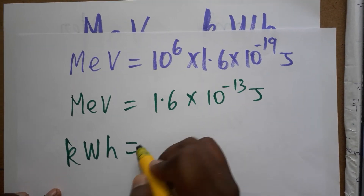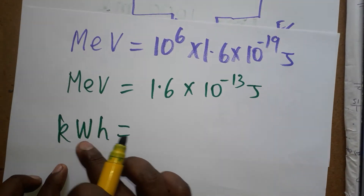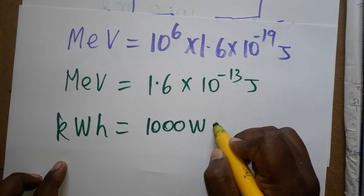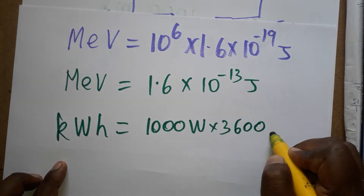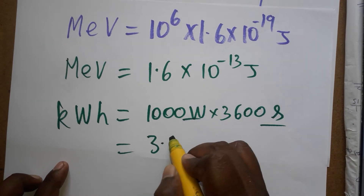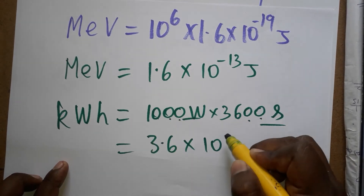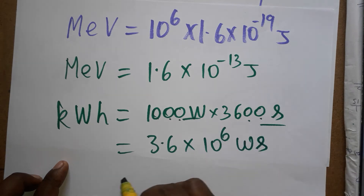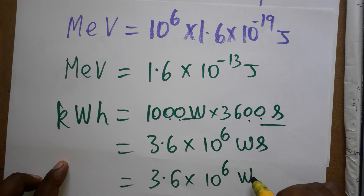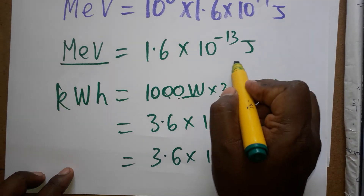Now 1 kWh is equal to how many joules? Kilo is a thousand watts, and one hour is 3600 seconds. Since watt into second gives joules, 1000 times 3600 gives 3,600,000 — that is 3.6 into 10 to the power 6 watt-seconds, which equals 3.6 into 10 to the power 6 joules.